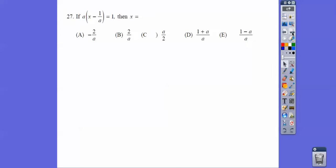Here a times x minus 1 over a equals 1. What I'm going to do is divide both sides by a first, so we get x minus 1 over a equals 1 over a. Then I did plus 1 over a on both sides, so we get x equals 2 over a, choice B.